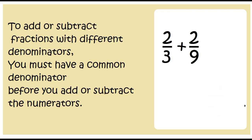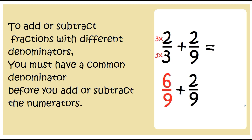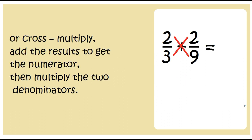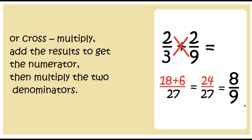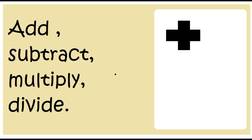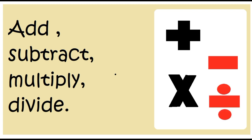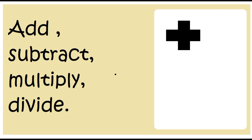Add, subtract, multiply, divide. Add, subtract, multiply, divide. To add or subtract fractions with different denominators, you must have a common denominator before you add or subtract the numerators, or cross multiply. Add the results to get the numerator, then multiply the two denominators.